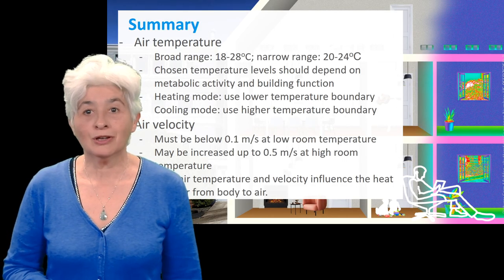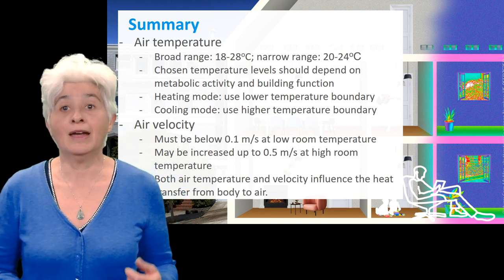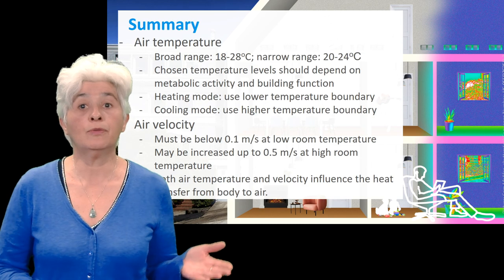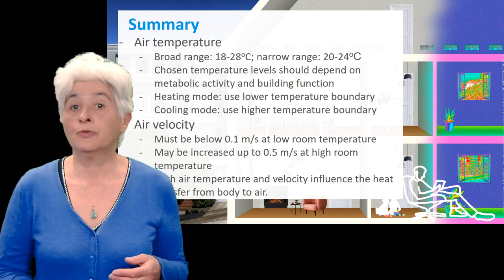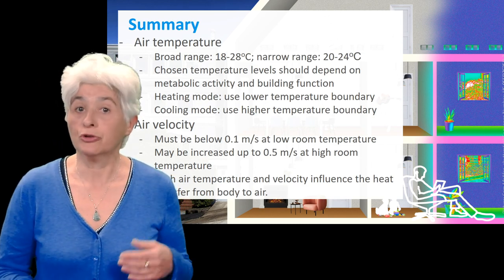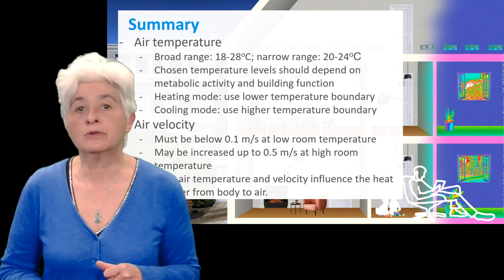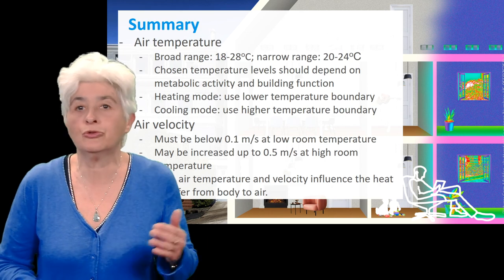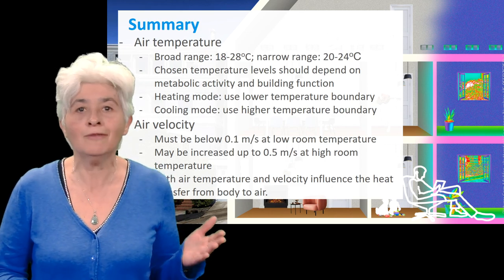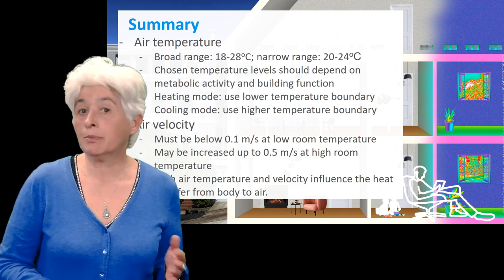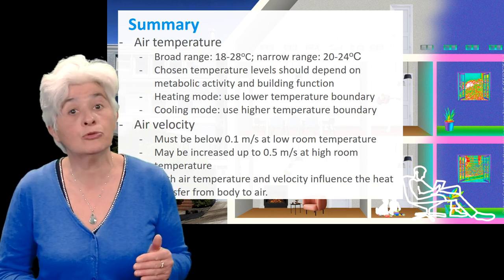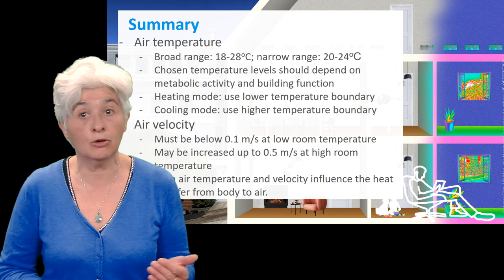In this lecture, we studied both air temperature and air velocity. We saw that they both influence the heat transfer from body to air. As for the air temperature, or so-called dry bulb temperature, the broad comfort range is 18 to 28 degrees Celsius, sometimes reduced to 20 to 24 to ensure even more comfort. The chosen temperature levels depend on the function of the building, which relates very much to the metabolic activity and the clothing worn.